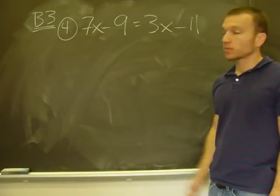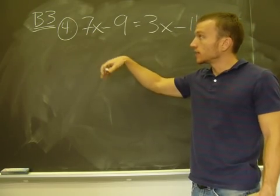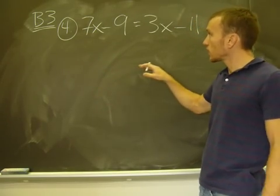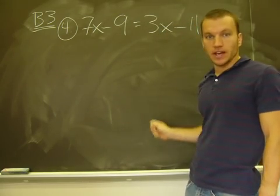Okay, B3, problem number 4, the directions are solve for x. This is called a linear equation. I'm going to solve for x by getting x by itself. My final answer should be x equals and then some value.